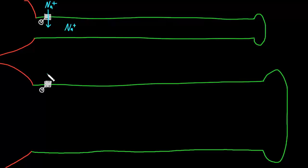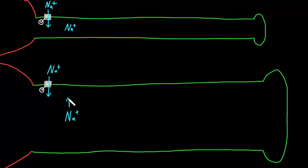And let's consider this for both the large diameter axon and the small diameter axon. So here's our sodium ion in the large diameter axon. Now both of these sodium ions, once they're inside the axon, could move in really an infinity of directions. They could go in any direction and any degree of direction, so that there's an infinity of pathways these ions could travel.